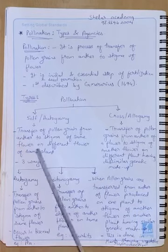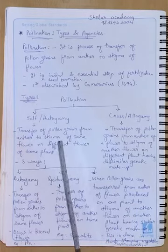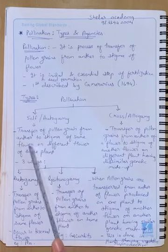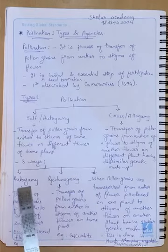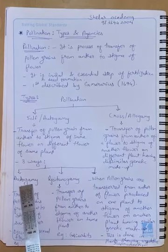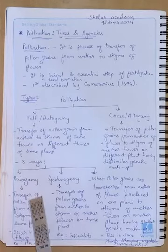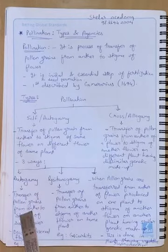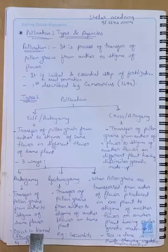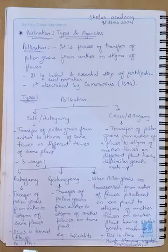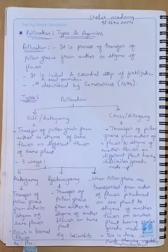Talking about transfer of pollen grain from anther to the stigma of the same flower — that is called autogamy. It means the pollen grain falls onto its own stigma. This is generally seen in bisexual flowers, which have both male and female parts. An example is the pea plant.